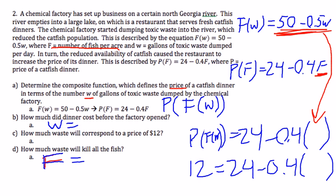And we're trying to find out how much waste will kill all of them. So do we know the relationship between fish and waste? Yes, we know that F equals 50 minus 0.5W. So think about how much fish per acre there are after we've killed all the fish. And we can plug in that value here for F, and then we have an equation that we can solve for W.